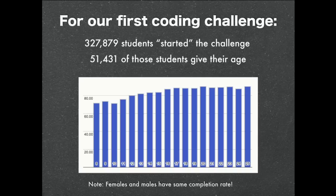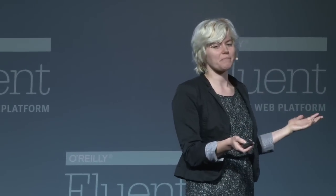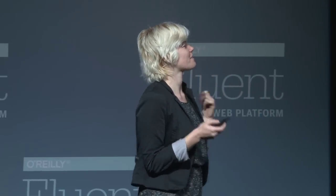We can look at the completion rates for those 50,000 students across the ages. This graph starts from the left-hand side with age 8 and goes to the right with age 25, ranging from around 70% to around 86%. You can see that the completion rate does vary across age — it starts off lower, then gets higher, and kind of stabilizes around age 15. Interestingly, female and male had the same completion rates, so we see a difference across ages, not across genders.